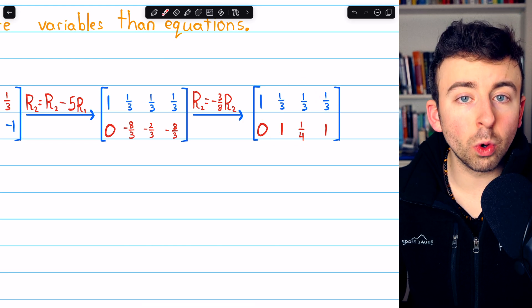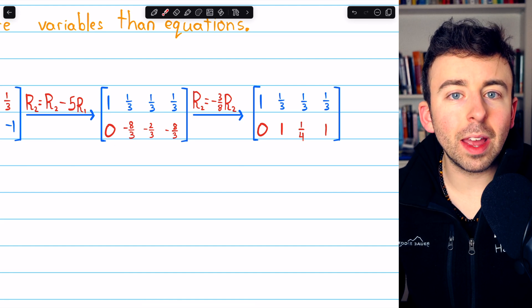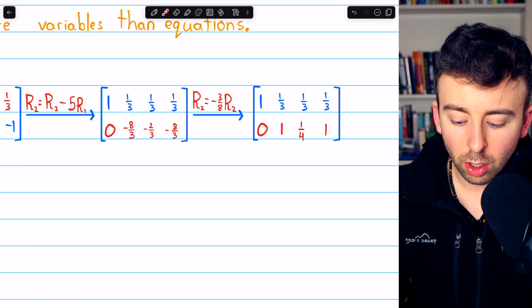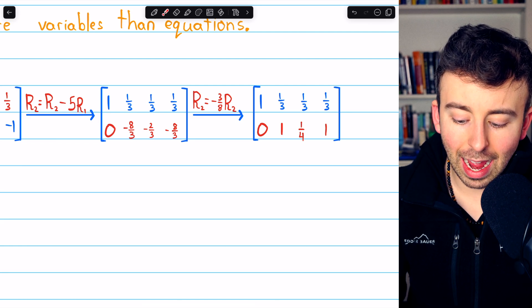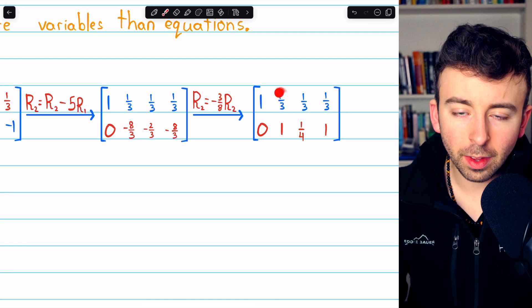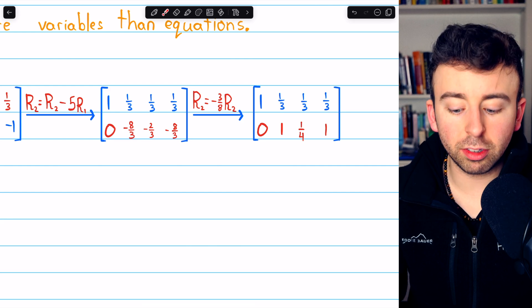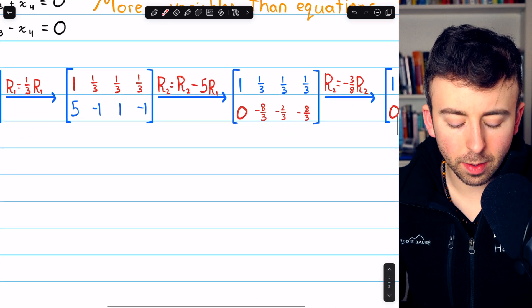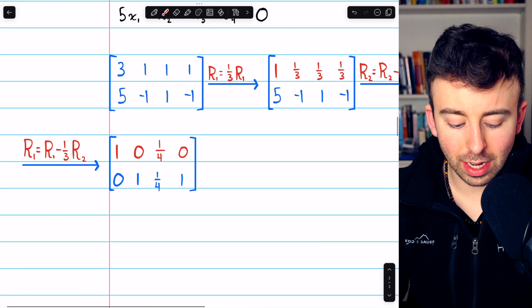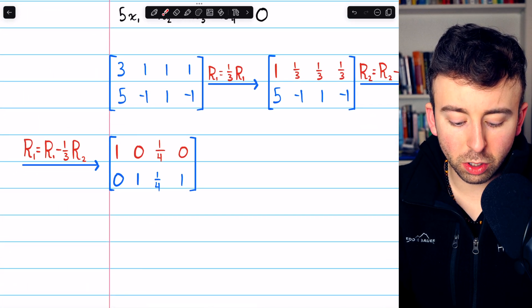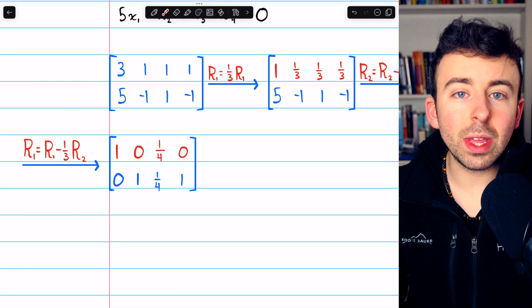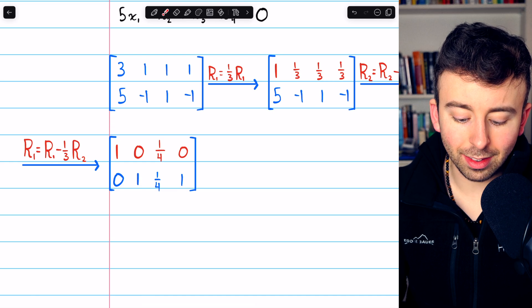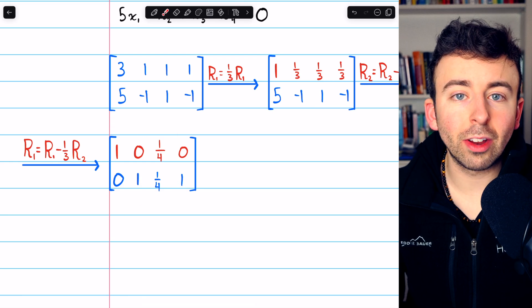Now, the only thing we have to do for Gauss-Jordan elimination is make sure we have zeros above and below all leading ones. We have a leading one here, so we're going to have to make this a zero. And in order to do that, we'll just subtract one third row two from row one. So that is our last operation here. Now we have zeros above and below all of the leading ones. This is now in reduced row echelon form.